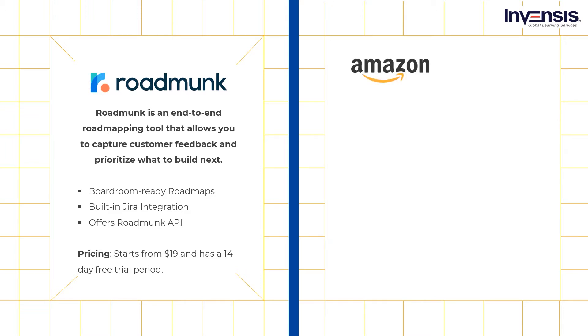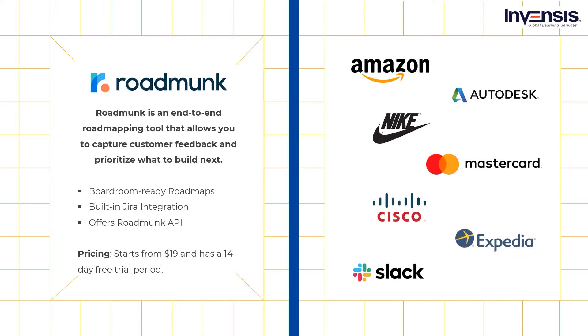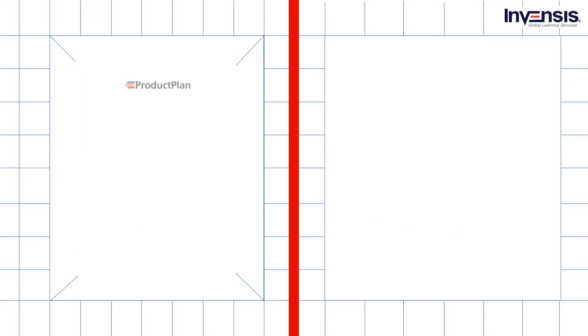A lot of well-known brands such as Amazon, Slack, Cisco, Nike, and MasterCard are using RoadMonk. Next in our list is another road mapping tool: Product Plan.